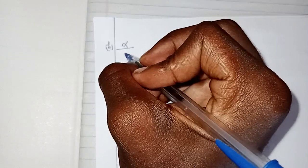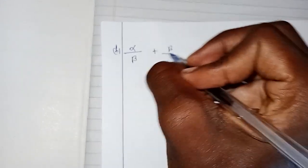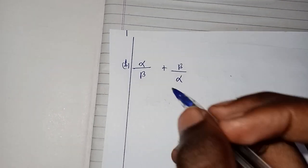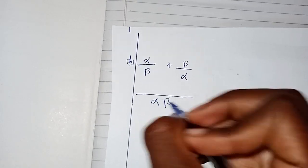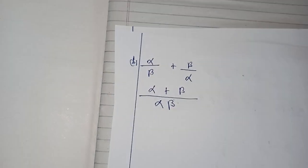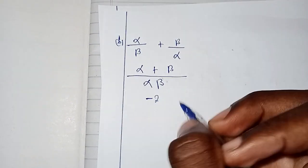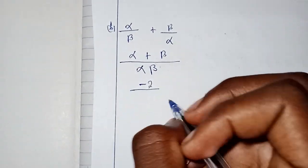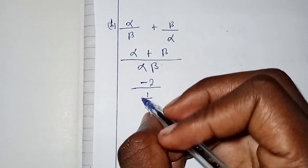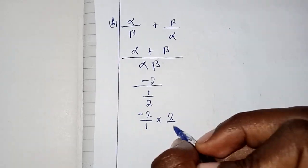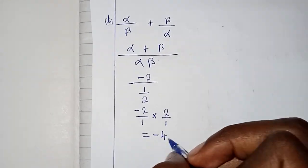Part b: find alpha over beta plus beta over alpha. Finding the common denominator alpha beta gives alpha squared plus beta squared over alpha beta. This equals sum of roots squared minus 2 times product of roots, all over the product of roots. Substituting: negative 2 over 1/2, multiplied by 2 over 1, gives negative 4.